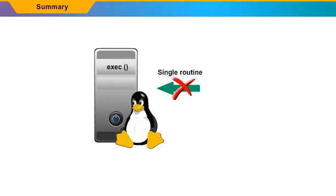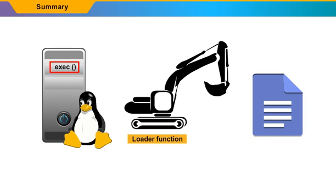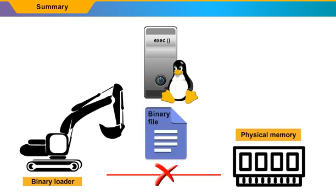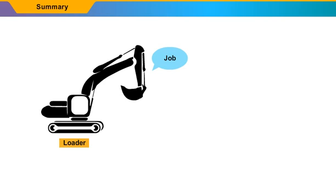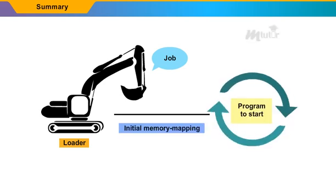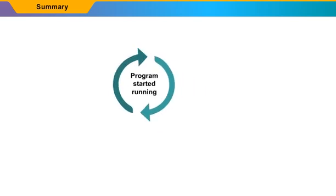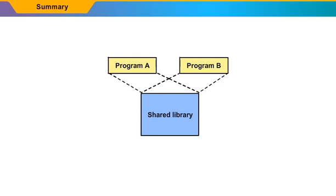In Linux, no single routine is followed to load a new program. The Linux system maintains a table of loader functions and gives the opportunity to each function to try loading the given file when an EXEC system call is called. The binary loader does not load a complete binary file into physical memory; rather, the pages of the binary file are mapped into regions of virtual memory. The job of the loader is to set up the initial memory mapping, which allows the execution of the program to start. In static linking, every program contains copies of the same system library functions, while the dynamic linker links the shared library with the executable program when it is executed.